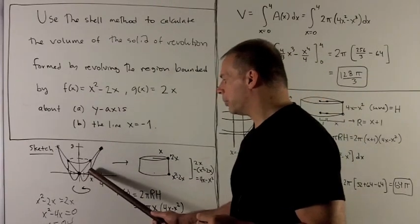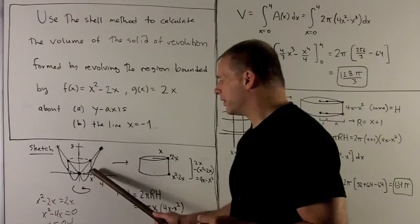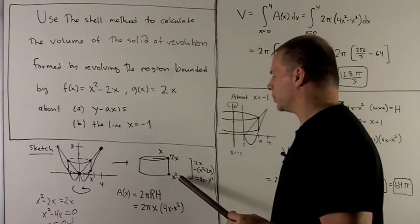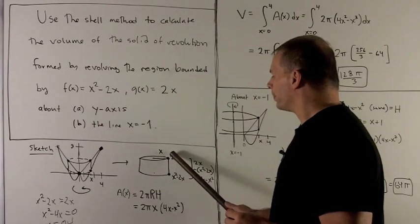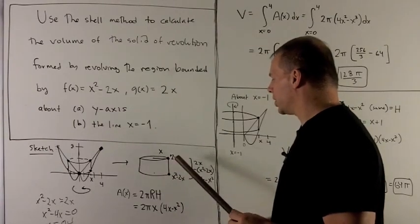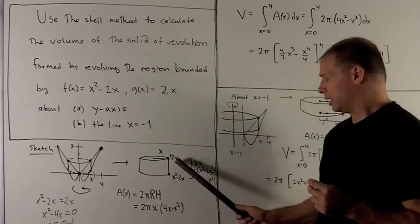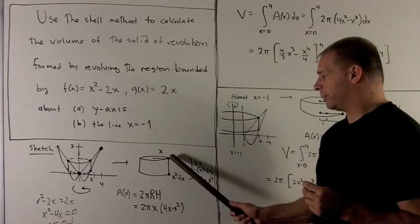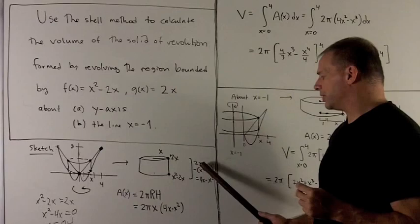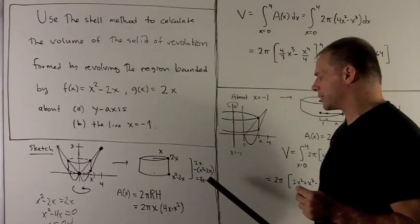For my height, I take a look at the edge of the cylinder. We notice the top of the cylinder is going to be on the line y = 2x. So that point there is just over x up 2x. For my bottom point, that's the lower graph. So that's going to be x² - 2x.